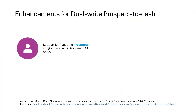The dual-write prospect-to-cash integration has been enhanced with several new features. We have introduced support for an account qualification process, where the account record is created and qualified first as a prospect and then as a customer. The enhancement includes a process for automatically converting a prospect to a customer account in an integrated quotation scenario.